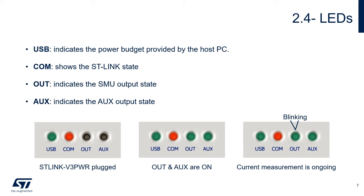Here are three common examples of LED status. In the first case, when the ST-Link is simply connected to the host PC, the green USB LED indicates that the host PC can provide enough energy for source measurement unit and AUX features, and the red COM LED indicates the ST-Link V3Power is waiting for an application to connect. In the second example, the OUT and AUX LEDs are green, indicating the ST-Link is delivering power to both outputs. When measuring current, the green OUT LED is blinking.